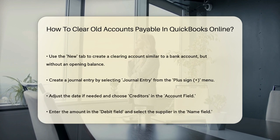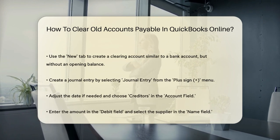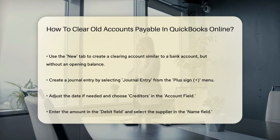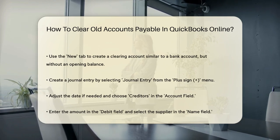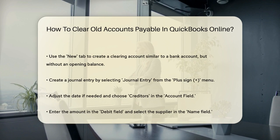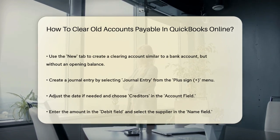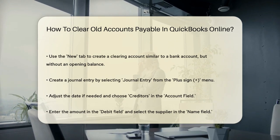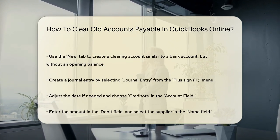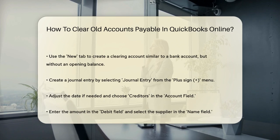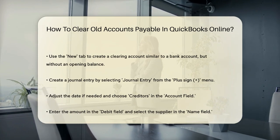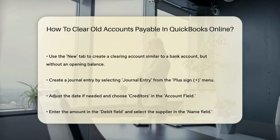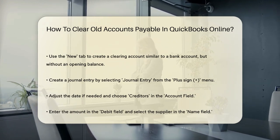Making a Journal Entry. Next, you'll need to create a journal entry to clear the old AP balances. Here are the steps: click the plus sign and choose Journal Entry. Change the date if necessary. In the Account field, choose Creditors from the drop-down list. Enter the amount in the Debit field, tab to the Name field and select the supplier from the drop-down list. In the next row, choose the clearing account you created in the Account field. The amount in the Credit field should be equal to the amount in the Debit field. Click Save and Close.